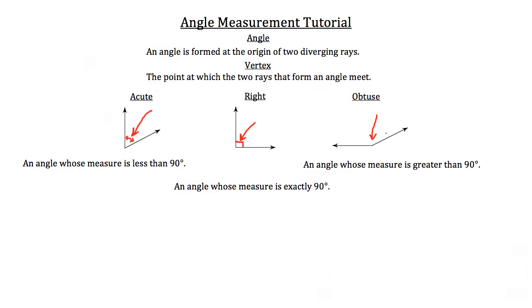So you can see that the obtuse is actually wider than that right angle because its angle has a measure that's greater than 90 degrees. And the acute angle is actually more narrow than a right angle because its measure is less than 90 degrees.